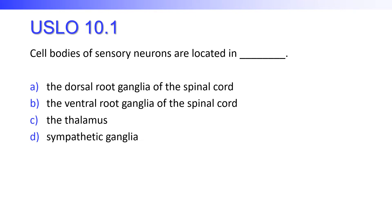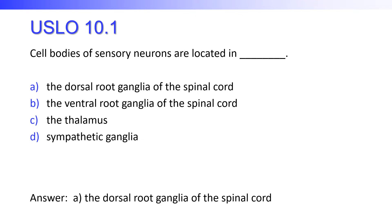Cell bodies of sensory neurons are located in the dorsal root ganglia of the spinal cord, the ventral root ganglia of the spinal cord, the thalamus, or the sympathetic ganglia? And hopefully you've looked at enough pictures that you know it is the dorsal root ganglia of the spinal cord.